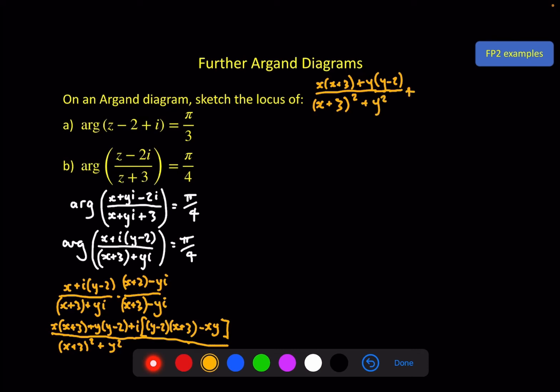And then we have (y - 2)(x + 3) minus xy, all divided by (x + 3) squared plus y squared. And that is the imaginary part. Now that's a pretty horrible looking complex number. But we have the real part, and we have the imaginary part, and it is a single complex number.